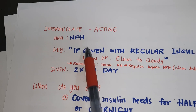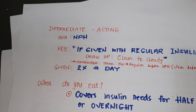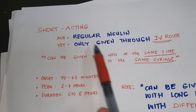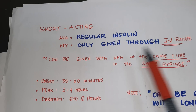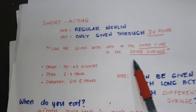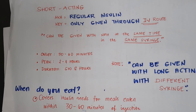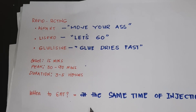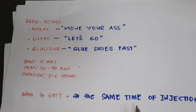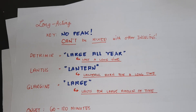Let's recap: intermediate acting is NPH — if given with regular insulin, draw clear to cloudy. Short acting, aka regular insulin, is only given through IV and can be given with NPH in the same syringe, or with long acting in a different syringe. Rapid acting — give at the same time as injection. Rapid, short, intermediate, long acting insulins.